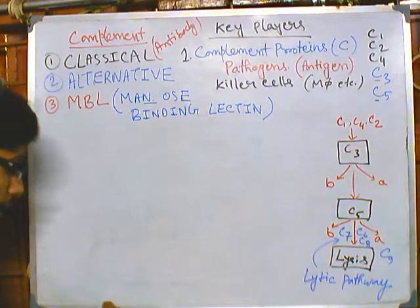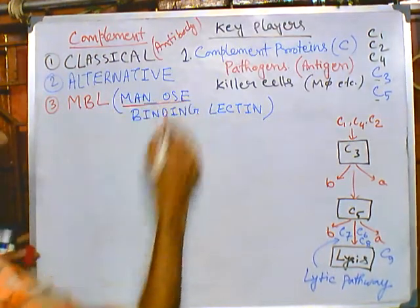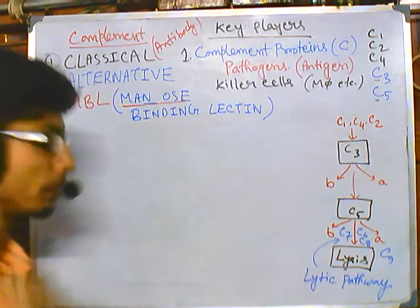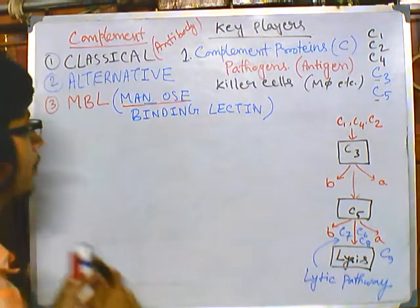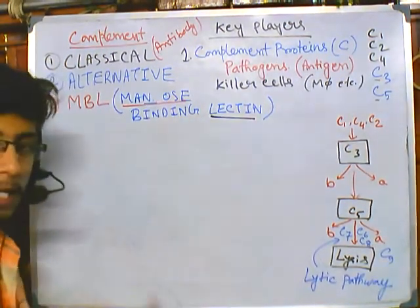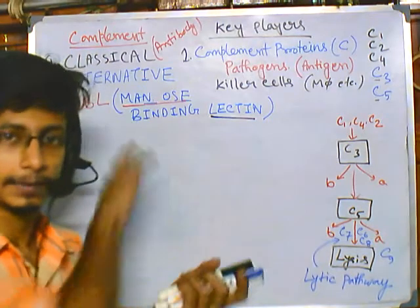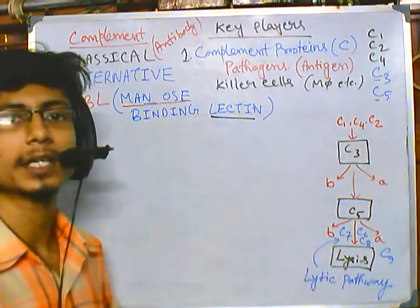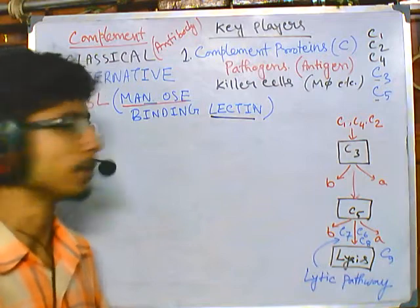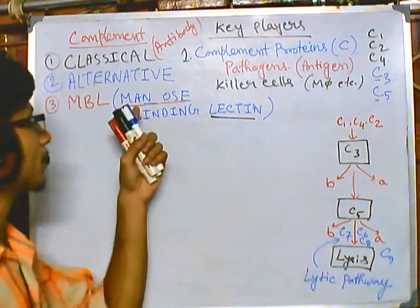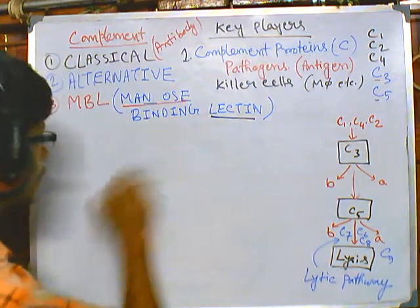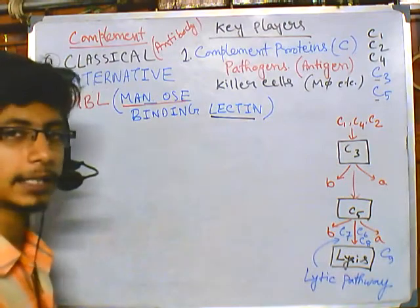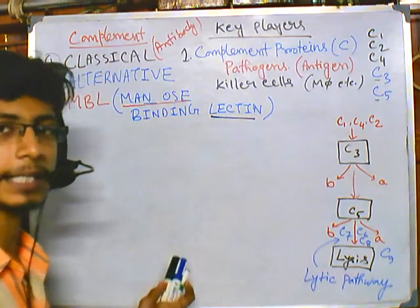Mannose is a sugar. Lectin is a sugar-binding molecule, so lectin is going to attach with mannose, as suggested by the name. Mannose is present on the bacterial cell surface as a polysaccharide. It acts as a molecular signal that tells the complement system that a bacterium has entered the body.